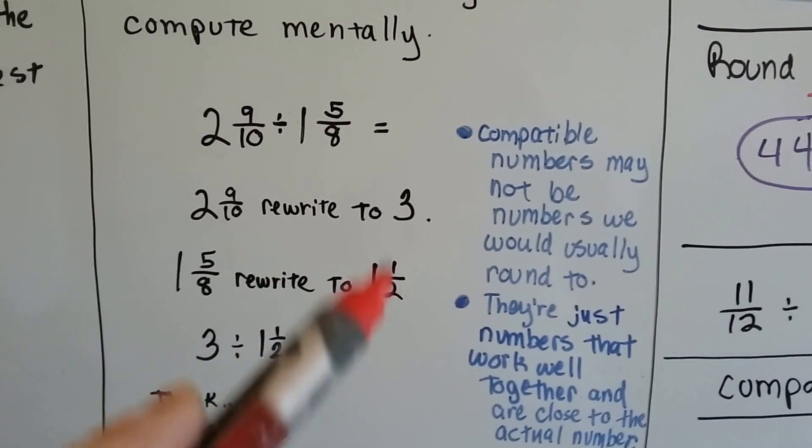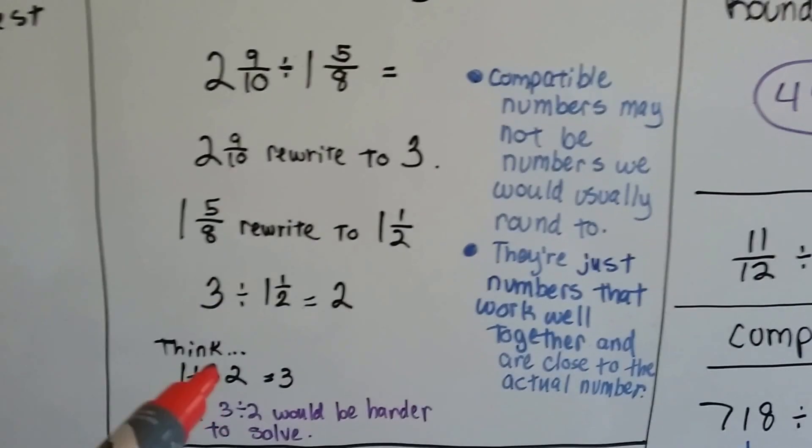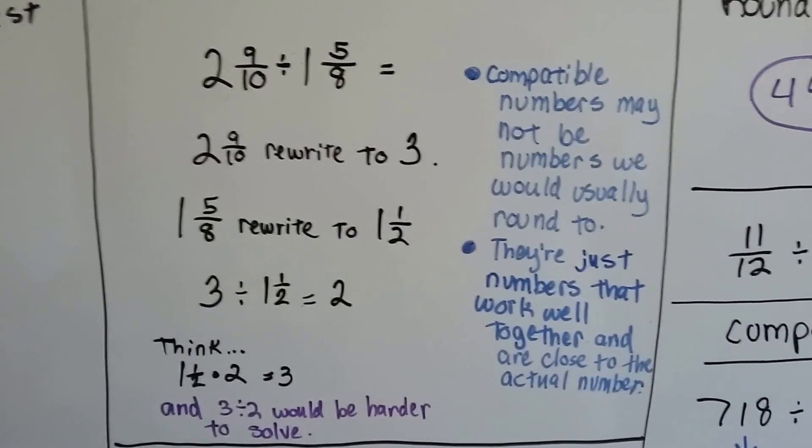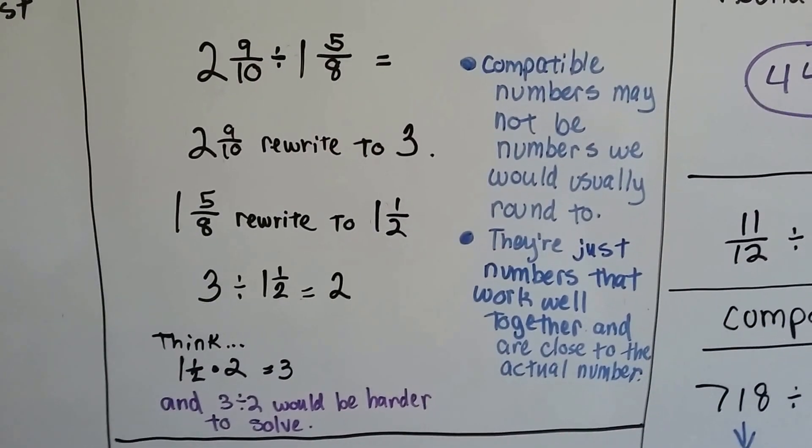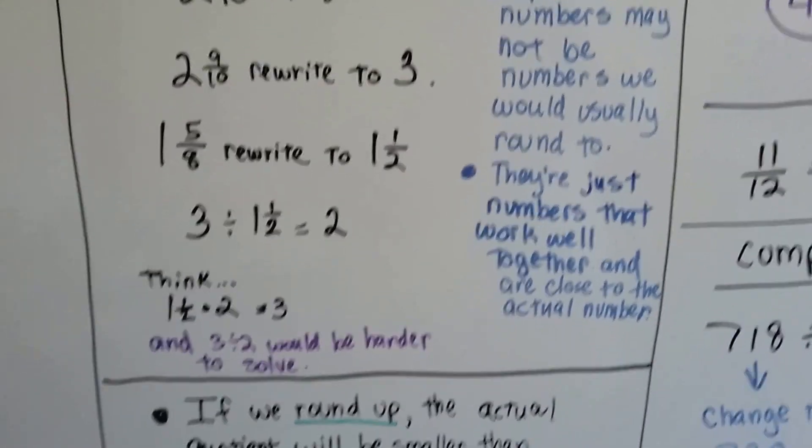If we had rounded, we would have gone up to two and we would have had three divided by two. So compatible numbers may not be numbers we would usually round to. They're numbers that work well together and are close to the actual number.